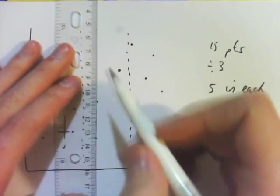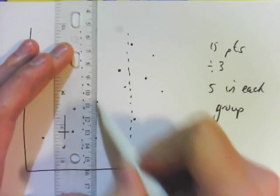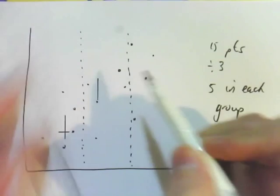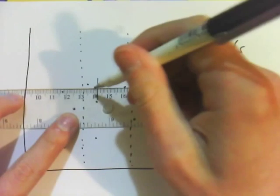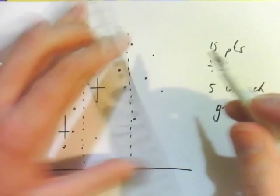Do the same for the others. 1, 2, 3. So it's going to be there somewhere. 1, 2, 3. So it's going to be where those two lines meet.